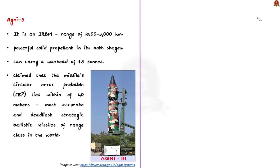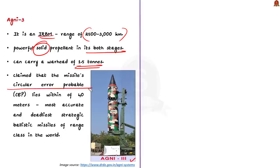Agni 3 is also an IRBM with a range of 2,500 to 3,000 kilometers. It uses solid propellant in both stages and can carry a warhead of 1.5 tons. A key feature of Agni 3 is that its Circular Error Probable, CEP, lies within 40 meters. CEP is defined as an imaginary circle taken with the ground target as center, providing missile accuracy. This makes Agni 3 one of the most accurate strategic ballistic missiles in the world. With smaller payloads, Agni 3 can hit targets even beyond 3,500 kilometers.